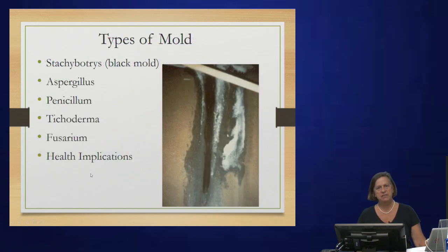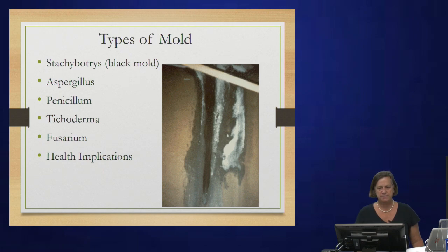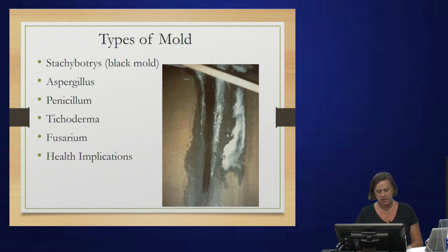However, there are certain types of mold that produce mycotoxins — and this is what would make a person ill. Stachybotrys is top of the list — that's black mold, you've probably heard about it. Also Aspergillus, Penicillium, Trichoderma, and Fusarium. The health implications can be serious.